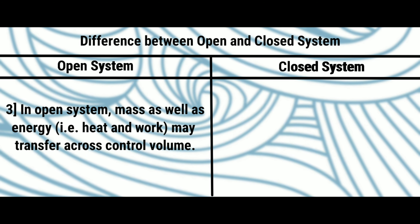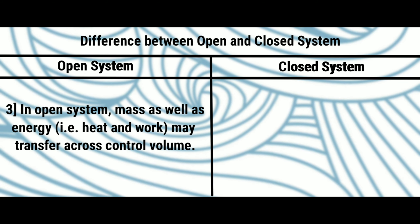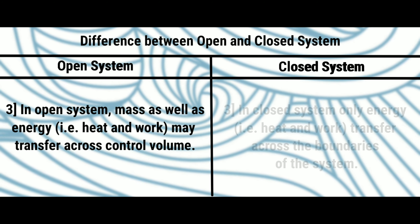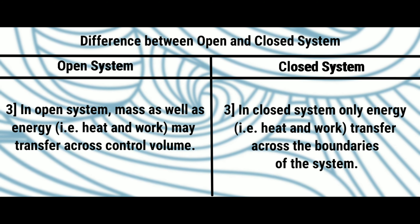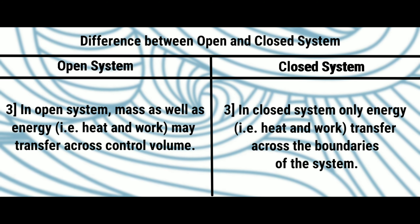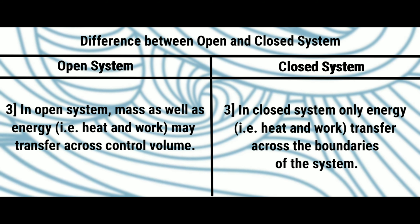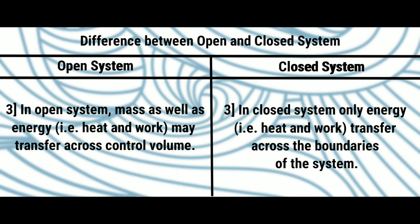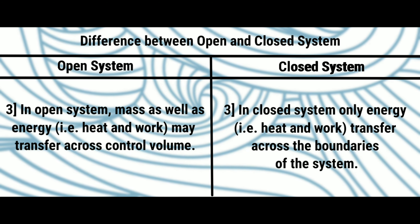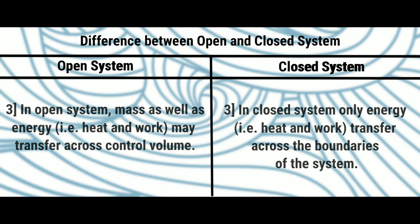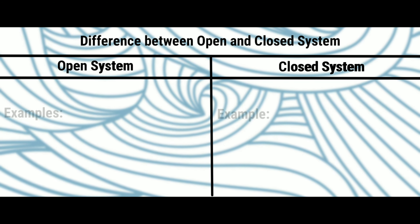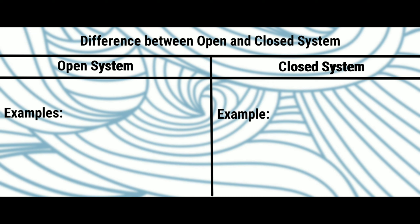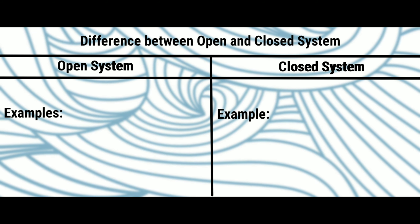The third point: in an open system, mass as well as energy — that is, heat and work — may transfer across the control volume. On the other hand, in a closed system, only energy, that is heat and work, transfers across the boundaries of the system. Now let's see the examples of open systems and closed systems.